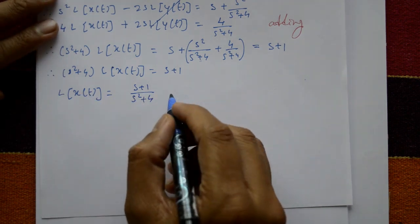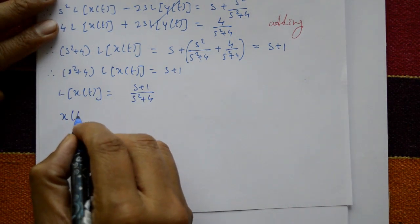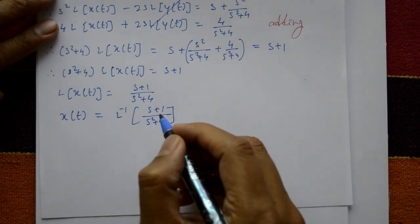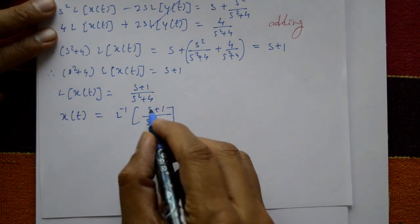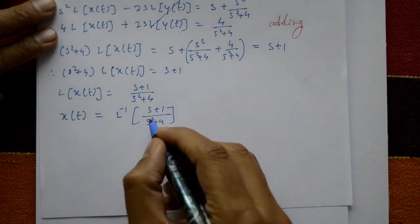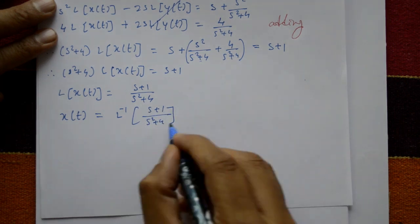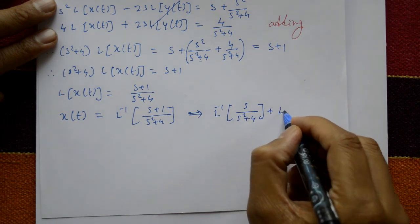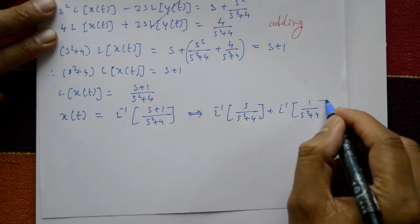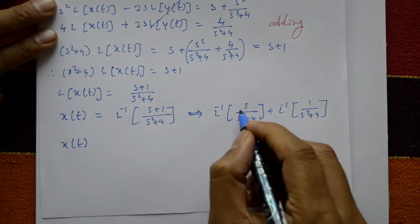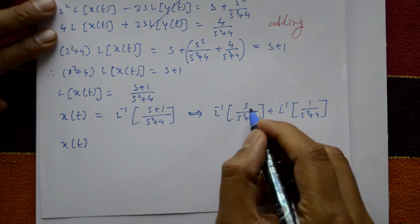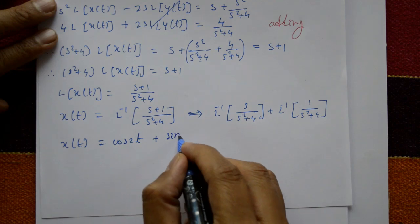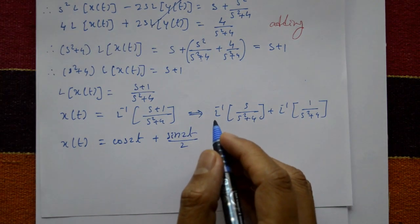Applying the inverse Laplace transform: x(t) equals L⁻¹{(s+1)/(s²+4)} equals L⁻¹{s/(s²+4)} plus L⁻¹{1/(s²+4)}, which gives x(t) equals cos 2t plus sin 2t / 2.